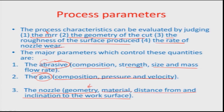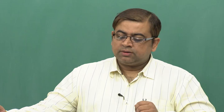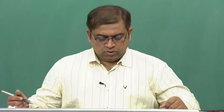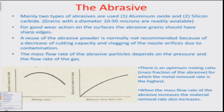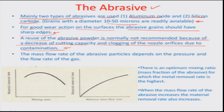The main two types of abrasives used in the AJM process are aluminum oxide and silicon carbide. The grains have a diameter of about 10 to 50 microns and are readily available. For good wear action on the machined surface, the abrasive grain should have very sharp edges. Reuse of abrasive powder is normally not recommended because of decreased cutting capacity and clogging of the nozzle orifices due to contamination. The mass flow rate of the abrasive particles depends on the pressure and flow rate of the gas.